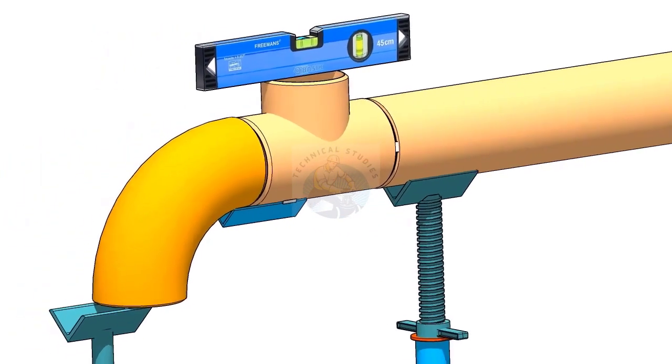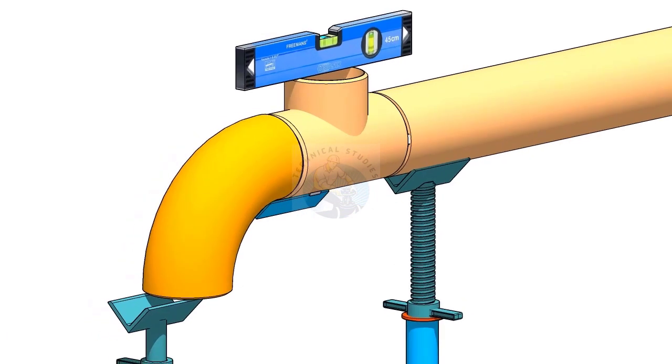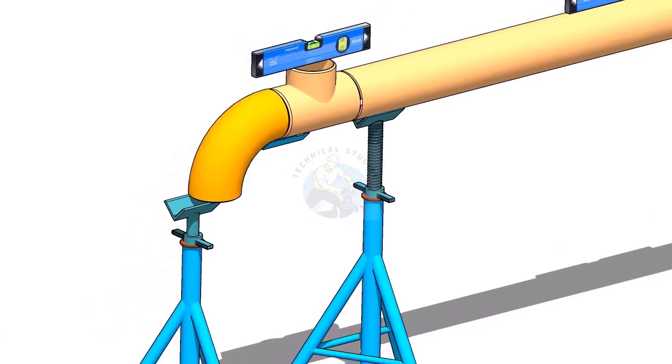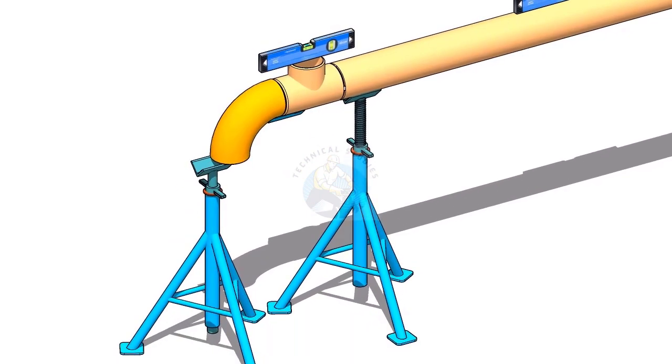Put the elbow on the angle cleat, provide proper support at the lower face of the elbow, unless it will fall down. Put the gap rod between the joint.